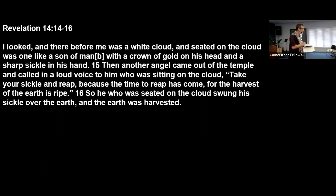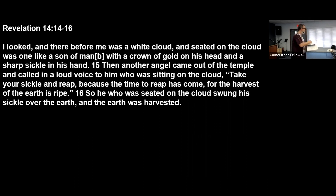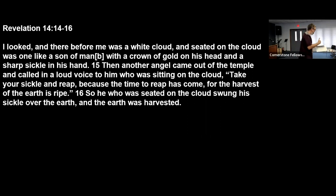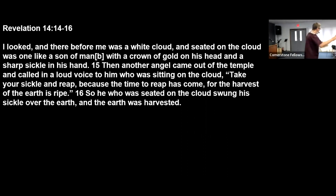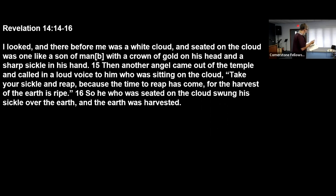"I looked and there before me was a white cloud, and seated on the cloud was one like a Son of Man with a crown of gold on his head and a sharp sickle in his hand." This end of chapter 14 is a parenthetical — a vision John has that isn't really related to the narrative going forward. Sometimes he has these visions that break into the narrative, like the vision about the woman and the dragon.